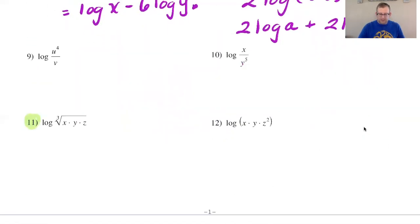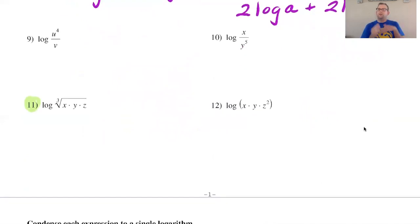Okay number 11 so this one I'm actually going to rewrite first and then I will expand it. I have the log of the cubed root of the product of x, y, and z so I'm going to first rewrite this as log of the product of these three variables raised to the one third power. Remember if you have the nth root of x to the m power, writing that as a radical exponent would be x to the m over n.